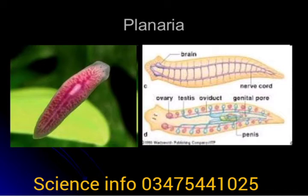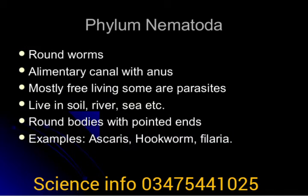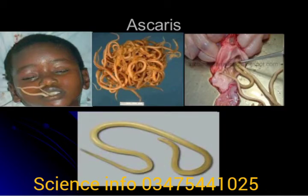Now we discuss phylum Nematoda. Nematodes are triploblastic. The digestive system is in the form of an alimentary canal with two openings. The excretory system consists of excretory canals that excrete through excretory pores. There is a nerve ring around the pharynx. Sensory organs called papillae are present on the lips. The circulatory and respiratory systems are absent.